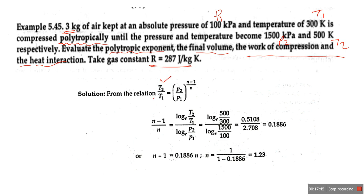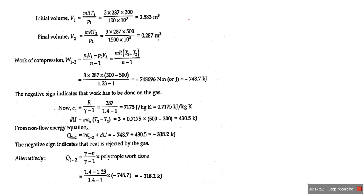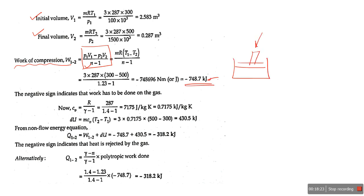First find the polytropic index N. Both temperatures and both pressures are with us, so take log on both sides of the TP relation to find N. Then using the characteristic gas equation PV = mRT, find V1 and V2. We need V1 and V2 because the work of compression formula is W = (P1V1 - P2V2)/(N-1). With N known, putting values and keeping pressure in Newton per meter squared gives the answer in joules. The answer is negative, indicating work done on the system during compression.